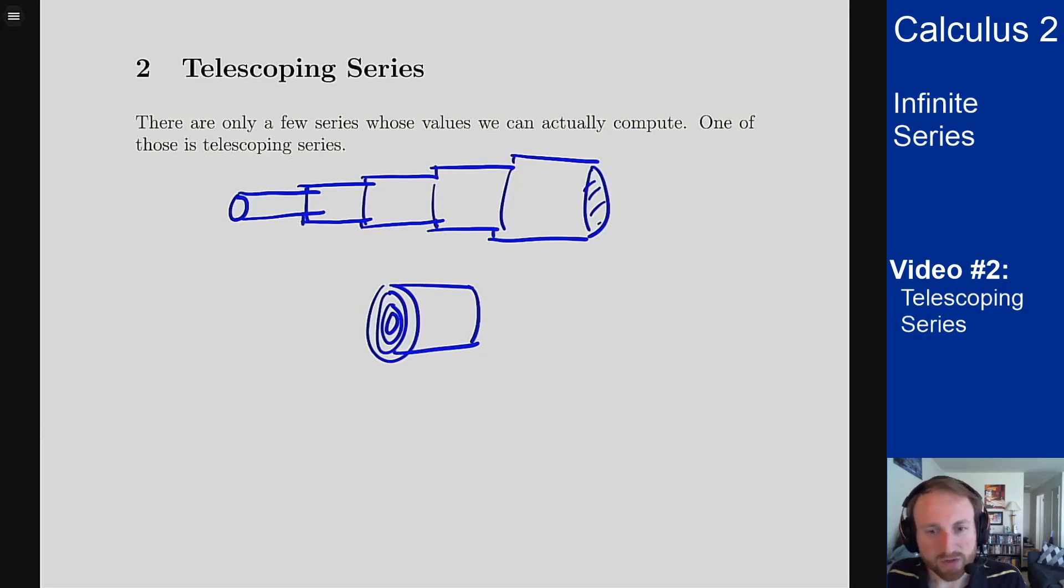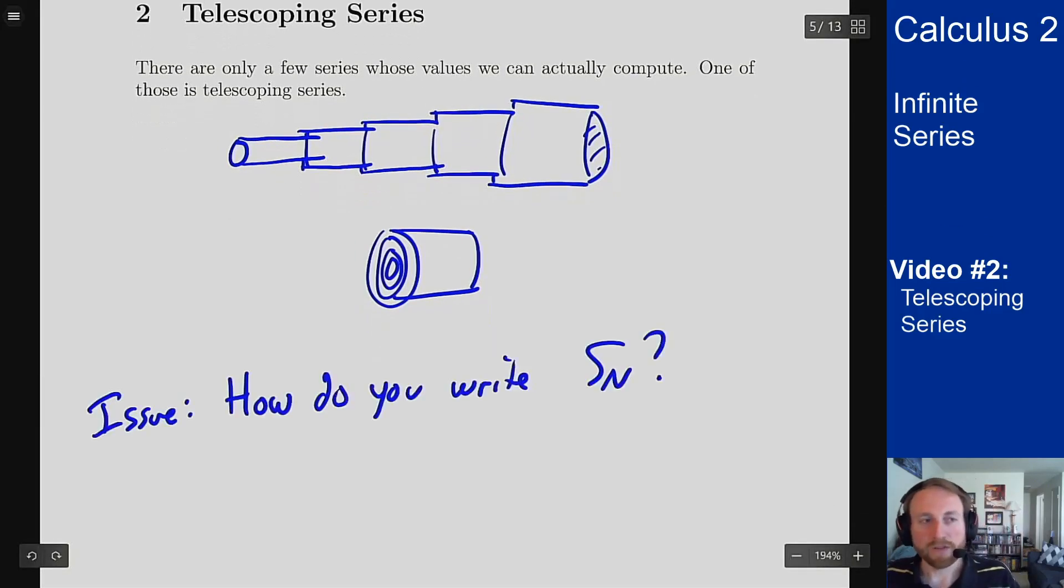The issue in doing all these series is how do you write this S_n partial sum? And the important thing is getting it in a way where I can then take a limit of this S_n when I'm done with it. Telescoping series have the advantage that because they collapse, like the little telescope, S_n has an easy formula to write out. And then since that's easy to write out, easy to take a limit, and then easy to get the answer from there.